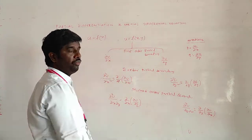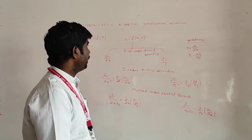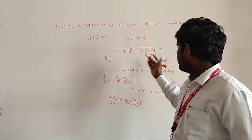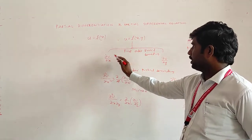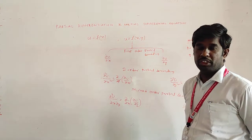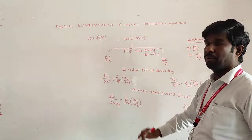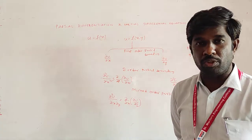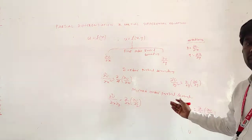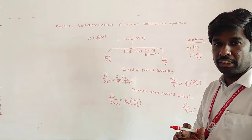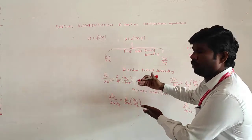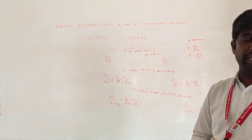Here u is a function of two variables x and y, where x and y are independent variables. We differentiate u with respect to x and y. Differentiating with respect to x gives the first order partial derivative, and similarly with respect to y. Again differentiating those first order partial derivatives with respect to x or y gives us the second order partial derivatives.